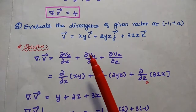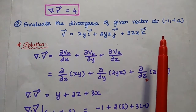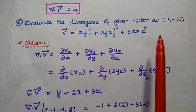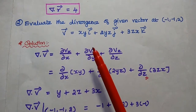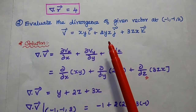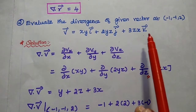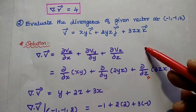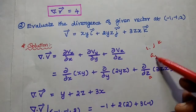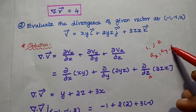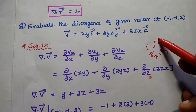The next problem: evaluate the divergence of a given vector at point (−1, −1, 2). The given vector is B = xy î + 2yz ĵ + 3zx k̂. Note that i, j, k can also be written as Ax, Ay, Az — these are unit vectors analogous to i, j, k.